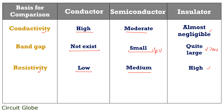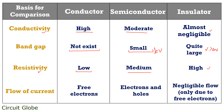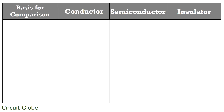Talking about the type of charge carriers that cause the flow of current: in conductors, free electrons are responsible for conduction. In semiconductors, electrons and holes both are responsible for flow of current. While in insulators, there is negligible flow of current, which is only due to the presence of free electrons.